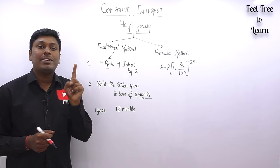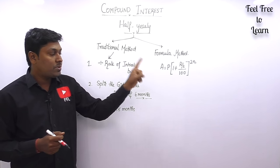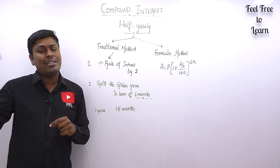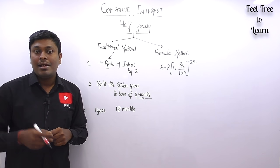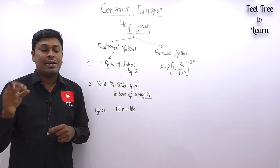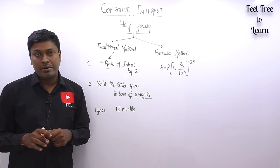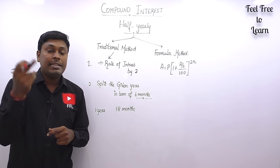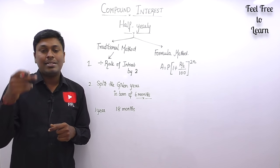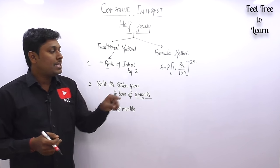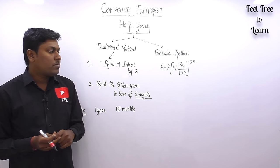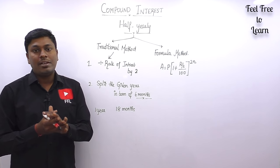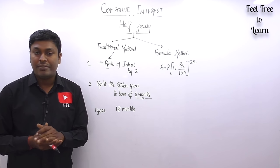n denotes number of years only. If the given value is in years, substitute directly. If they have given the time in months, convert the months into years by dividing by 12. For example, if they have given 18 months, convert as 18 divided by 12, then substitute that value for n.